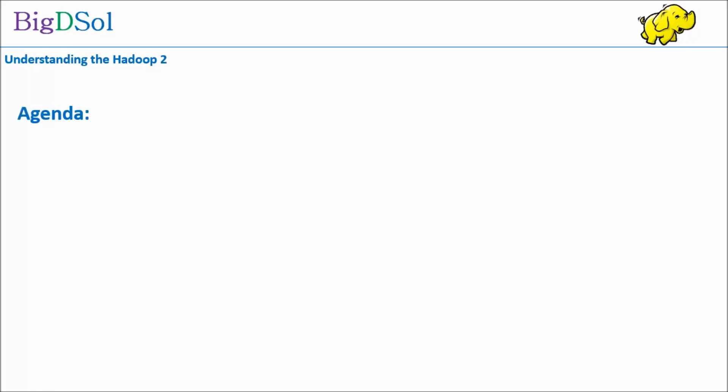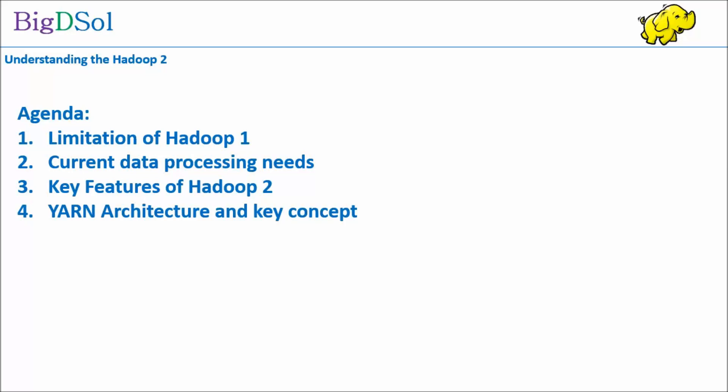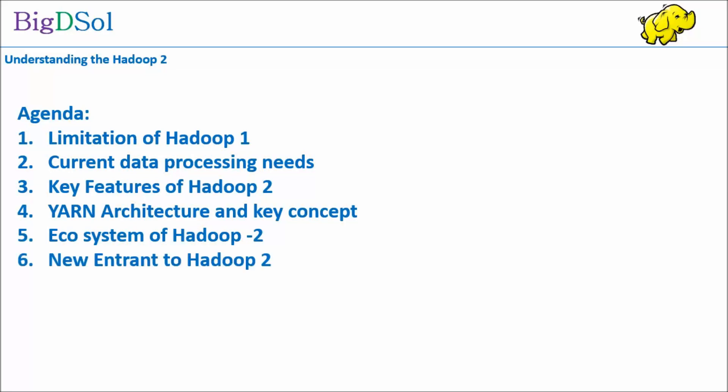Today we will be explaining: limitation of Hadoop 1, current data processing needs, key features of Hadoop 2, YARN architecture and key concepts, ecosystem of Hadoop 2, new entrants to Hadoop 2, limitations of YARN, and Weave.